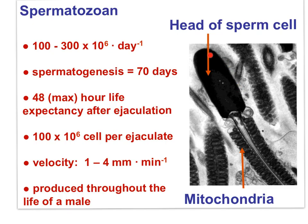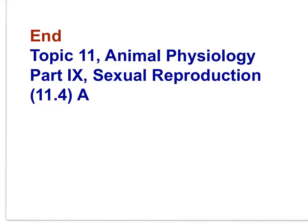Here is a micrograph of the head of the sperm, including the nucleus, the acrosome, and the large mitochondrion. Millions of sperm are formed every day; spermatogenesis requires 70 days for full maturation. Sperm will live for approximately 48 hours after they've been ejaculated. Approximately 100 million cells per ejaculate, they swim 1 to 4 millimeters per minute and are produced throughout the life of a male following puberty. And that brings us to the end of IB Bio Topic 11 Animal Physiology Part 9, Sexual Reproduction A.